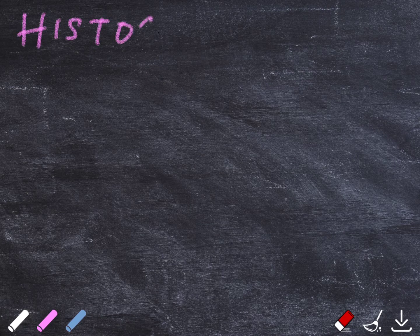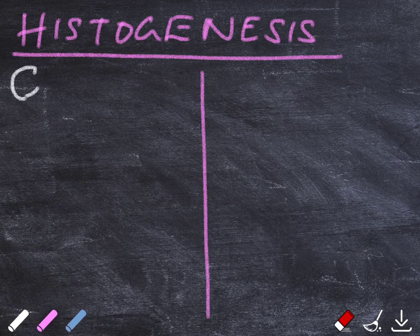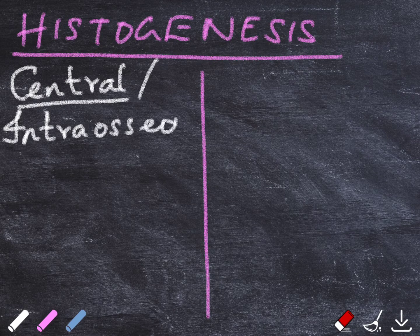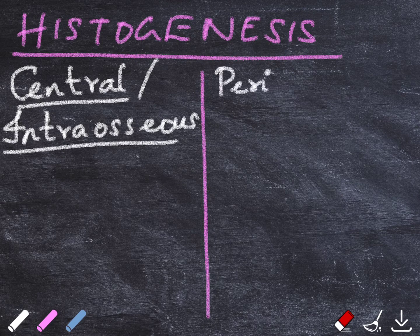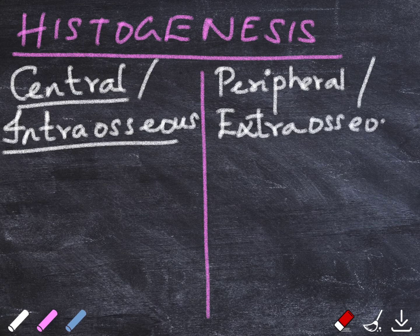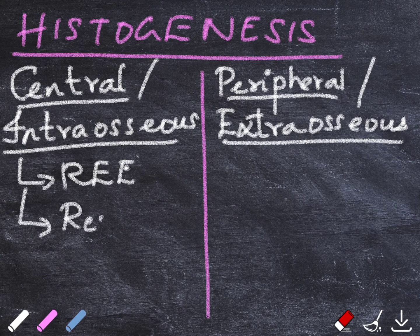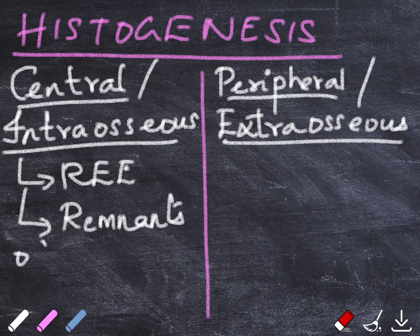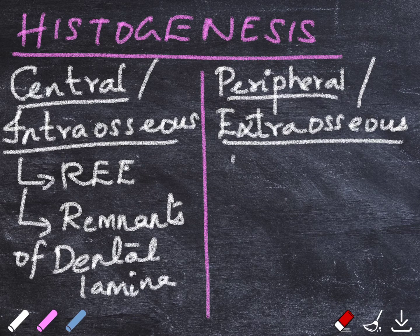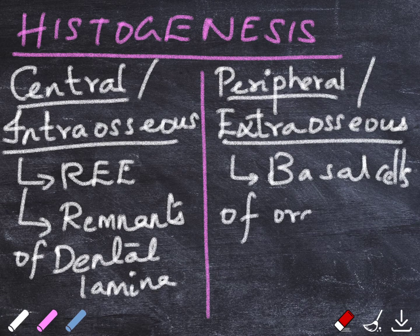Moving on to the histogenesis. The exact source of epithelium is not understood. But when you differentiate it into two groups, the central or intraosseous COC and the peripheral or extraosseous COC, we can talk about different possible sources. For central, it can be from the reduced enamel epithelium or the remnants of the dental lamina. Whereas for the peripheral or extraosseous variant, it can be from the basal cells of the oral epithelium.